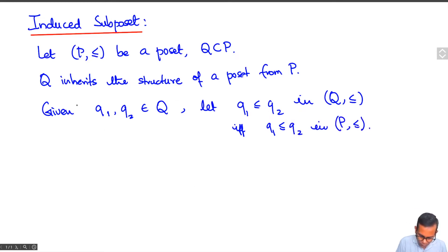So then we call this the induced subposet of P. Well, depending on the choice of Q, you get different induced subposets. So we could say Q is called an induced subposet of P. Given any poset, every subset gives rise to what can be thought of as a new poset in its own right.